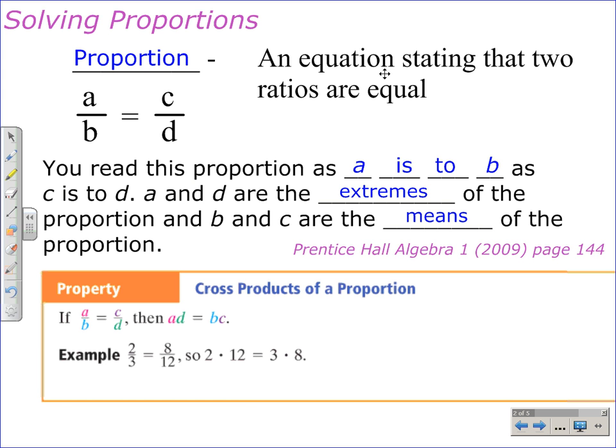Proportion: an equation stating that two ratios are equal. In a previous video lesson, we talked about ratios and how a ratio is another word for a fraction. Here we have a proportion: a over b equals c over d. You can read this proportion as a is to b as c is to d.